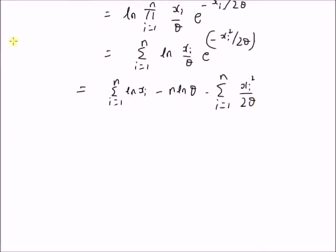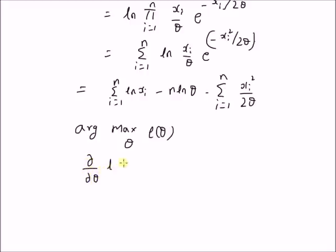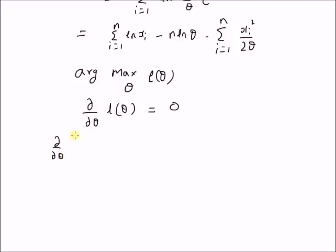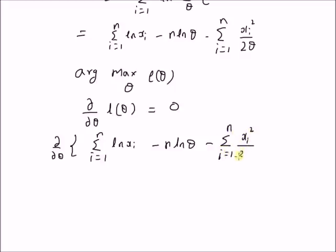We can find the maximum likelihood estimator by finding the value of theta at which the log likelihood function has the maximum value. We can determine that value by equating its derivative with respect to theta equal to 0. That is, the derivative with respect to theta of the log likelihood function is the derivative of the sum: summation from i equal to 1 to n of log of xi, minus n times logarithm of theta, minus summation from i equal to 1 to n of xi squared over 2 theta.